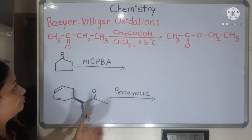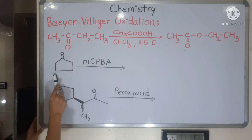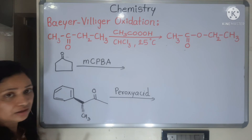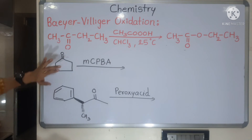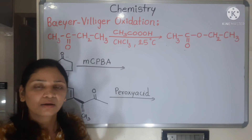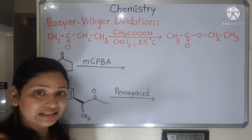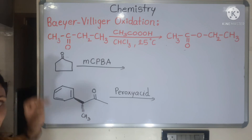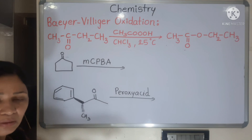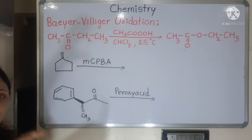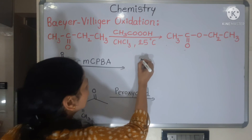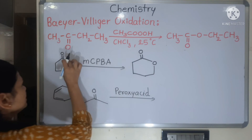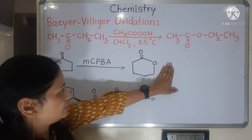Let's see two examples. First is a five-membered ring — cyclopentanone. If we do Baeyer-Villiger oxidation of cyclopentanone using MCPBA (meta-chloroperoxybenzoic acid), we need to insert an oxygen next to the ketone. Since this is a cyclic ketone (5-membered ring), inserting oxygen into the ring increases the ring size. So the 5-membered ring becomes a 6-membered ring, giving a lactone as the product.